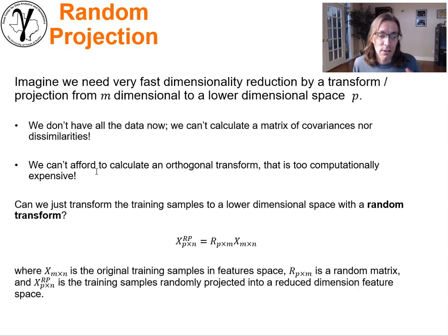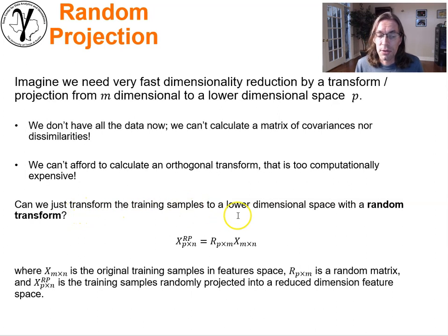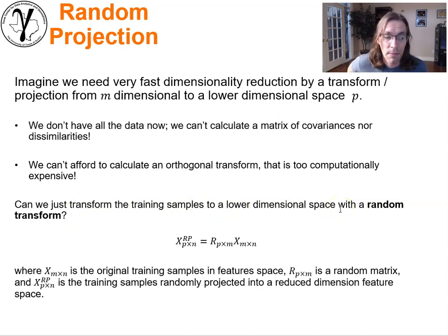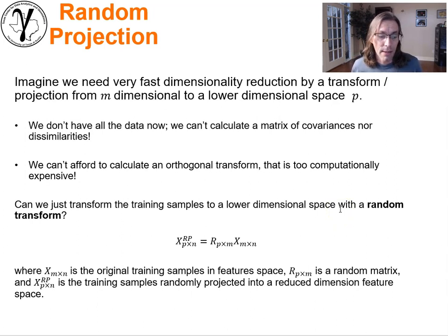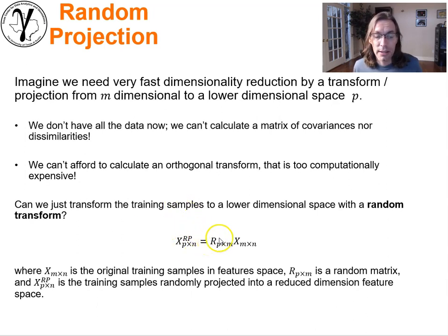We can't do that. So the question is: can we just transform the training samples to a lower dimensional space with a random transform? That's a really wild idea. Can we just go ahead and formulate a random transform and apply it to our data?